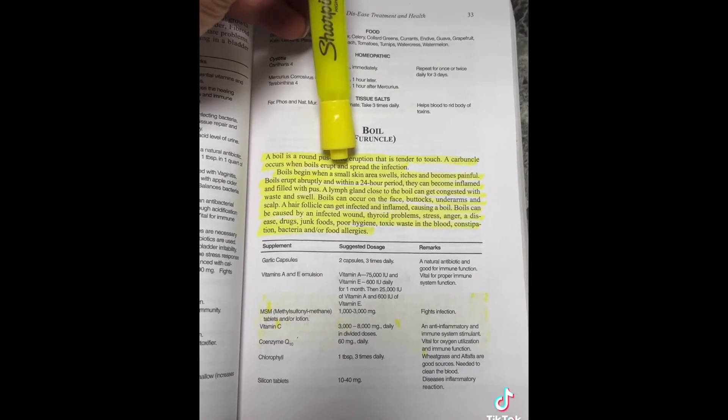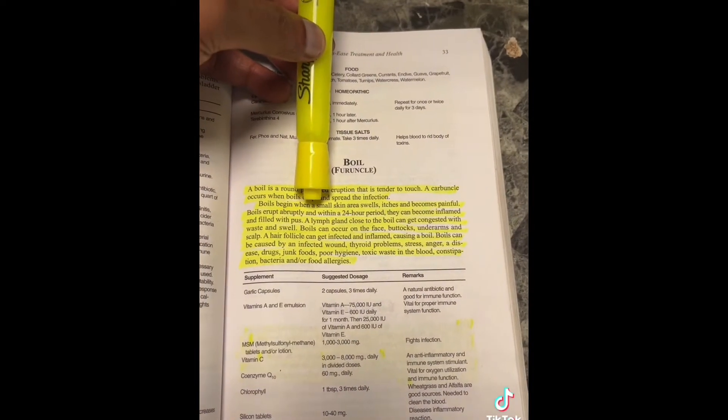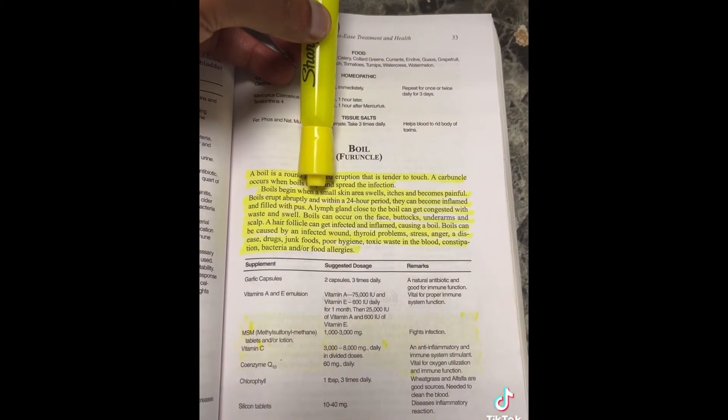Boils erupt abruptly, and within a 24-hour period, they can become inflamed and filled with pus. A lymph gland close to the boil can get congested with waste and swell.